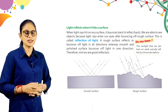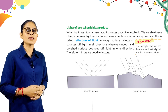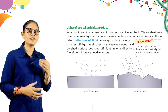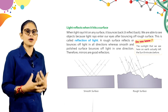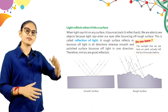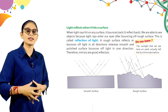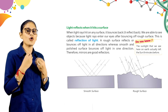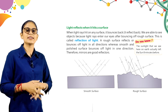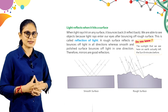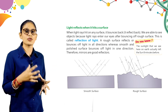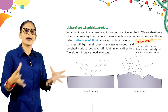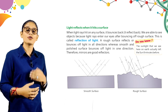Light reflects when it hits a surface. When light rays hit any surface, it bounces back — it reflects back. We are able to see objects because light rays enter our eyes after bouncing off a rough surface. This is called reflection of light. A rough surface reflects light in all directions, whereas a smooth and polished surface bounces light in one direction. Therefore, mirrors are good reflectors. If light hits a smooth surface it bounces back in a similar direction, but if it hits a rough surface it reflects in all directions — that is why we call mirrors good reflectors.